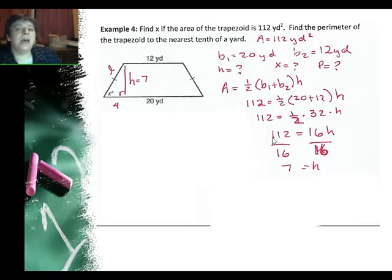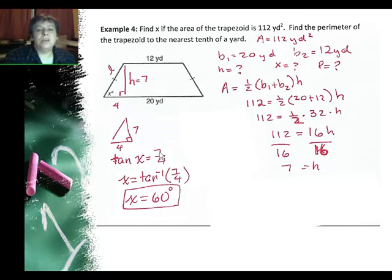Okay, well now that I know that the height is 7, this tells me this is a right triangle here. I know the adjacent side, and I know the opposite side. So I could use tangent. Tangent of x is 7 over 4. I'm trying to find the angle, so I'm going to do inverse tangent. Inverse tangent of 7 fourths is 60. It's not exactly 60, but it's really close. So angle x is 60 degrees.